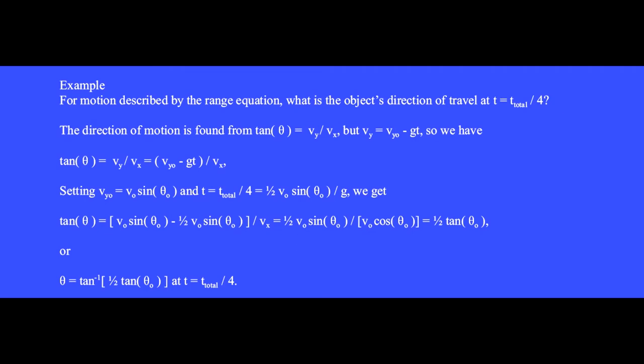For motion described by the range equation, what is the object's direction of travel at t equal t_total over 4, where t_total is the total duration of the flight in seconds? Relative to the positive x-axis, the direction of motion is always found from tan(θ) equals v_y divided by v_x. But we know that v_y equals v_y0 minus gt. So we have tan(θ) is v_y0 minus gt divided by v_x.